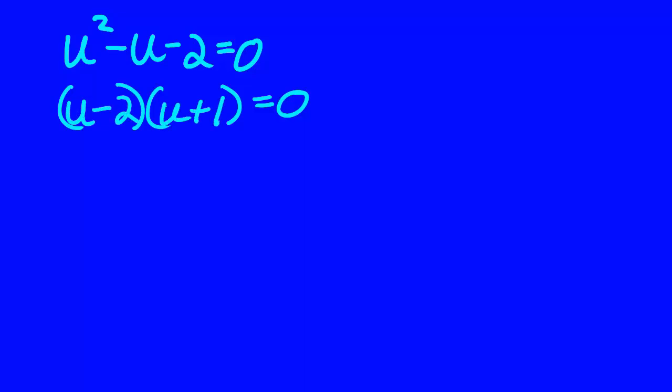So this factors into (u - 2)(u + 1). We set each factor equal to 0 and we solve each resulting little equation.